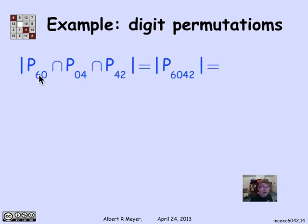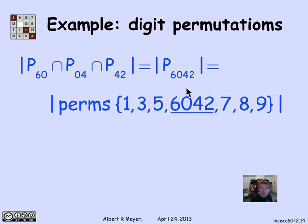Finally, how many permutations have all three patterns 6,0 and 0,4 and 4,2? That is exactly the set of sequences with the single four-digit pattern 6,0,4,2. Treating 6,0,4,2 as one object along with the remaining six digits gives seven objects, so there are 7! permutations that have all three patterns.